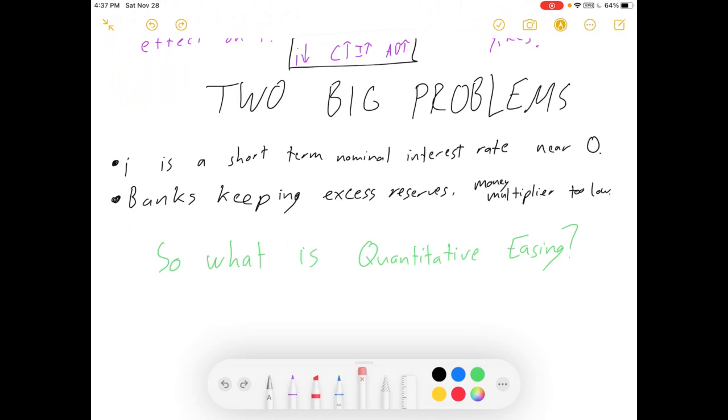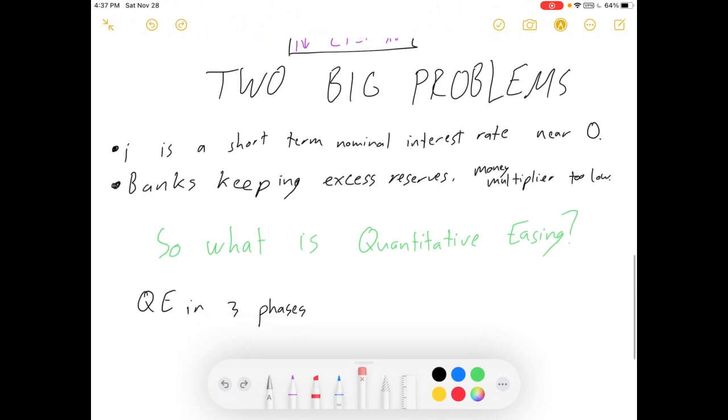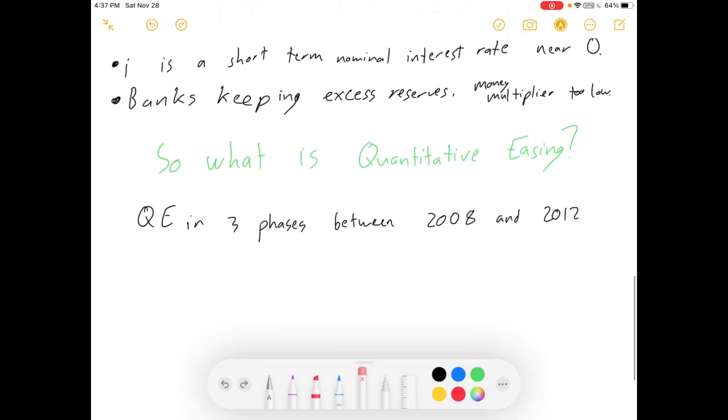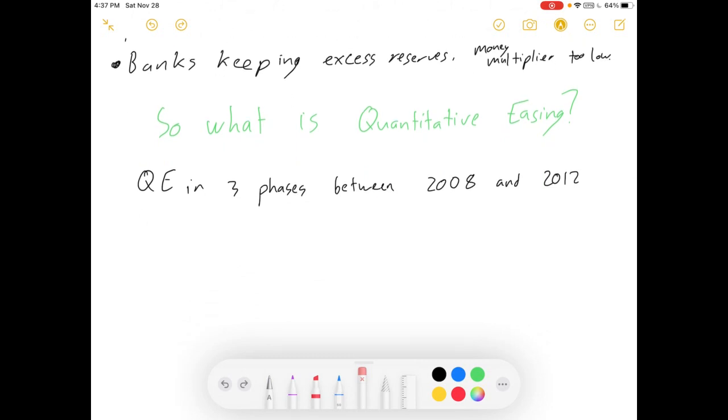So what is quantitative easing? Because this was the Fed's answer to this problem. Quantitative easing happened in three phases between 2008 and 2012. It's been tried in other places like in Japan too. It wasn't like a completely original idea, but it was kind of a new deal for us, because the Fed typically only buys short-term government debt.